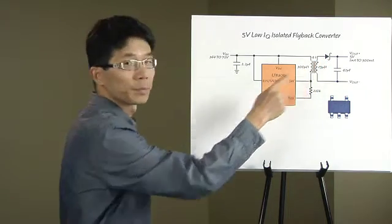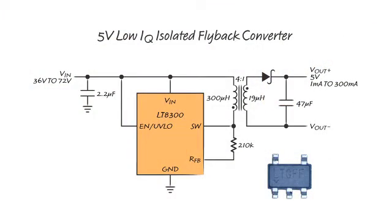The LT8300 is our new 100-volt input micropower, no opto, isolated flyback converter with integrated 150-volt, 260-milliamp DMOS power switch. It operates from wide 6-volt to 100-volt input voltage range and delivers up to 2-watts of isolated output power.